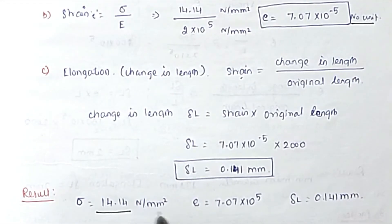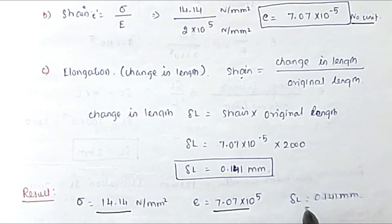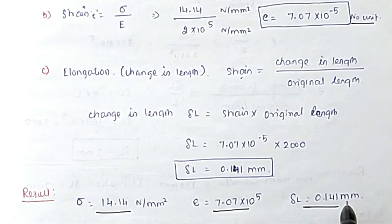So the final results are: stress = 14.14 N/mm², strain = 7.07×10⁻⁵, and elongation ΔL = 0.14 mm. This is the method to solve a mechanics of solids problem. We will see you again in the next video. Thank you.